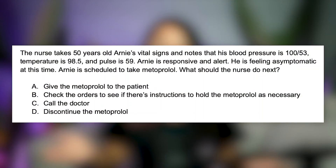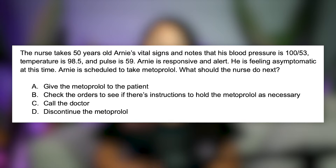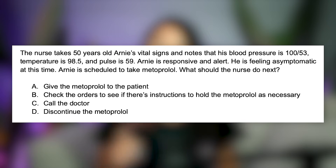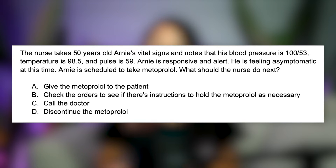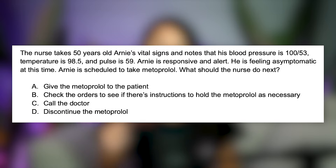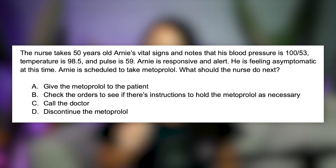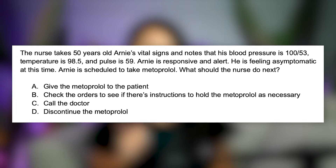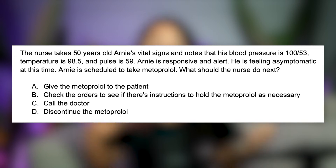You can use this knowledge and apply it to this following question. The nurse takes 50-year-old Arnie's vital signs and notes that his blood pressure is 100 over 53, temperature is 98.5, and pulse is 59. Arnie is responsive, alert, and feeling asymptomatic at this time. Arnie is scheduled to take Metoprolol. What should the nurse do next? A) Give Metoprolol to the patient. B) Check the orders to see if there are instructions to hold the Metoprolol as necessary. C) Call the doctor. D) Discontinue the Metoprolol.